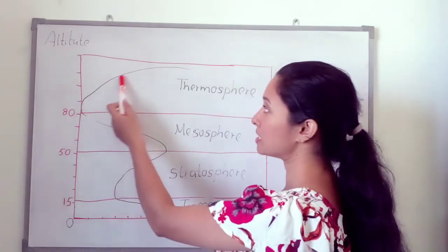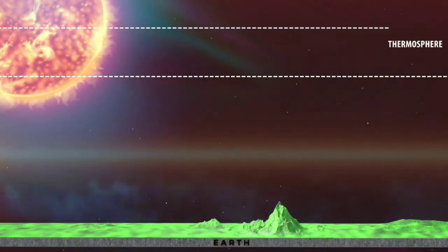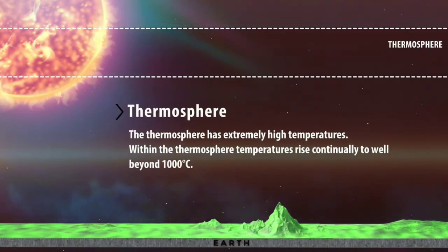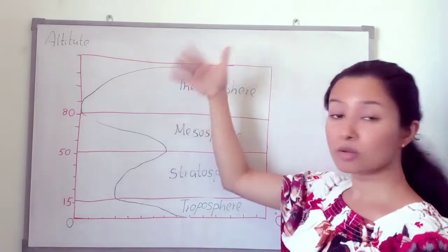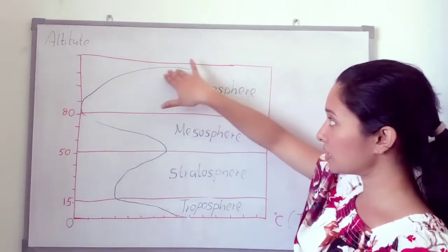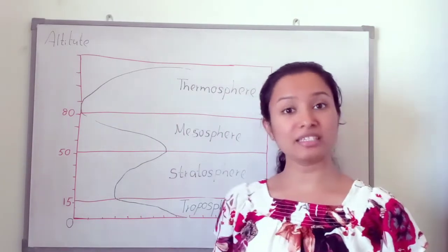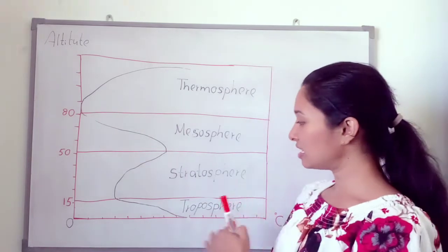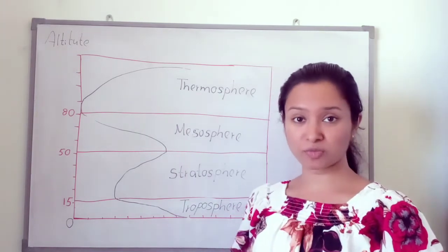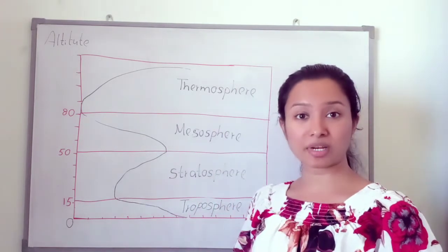In the thermosphere, temperature increases because there are air particles that absorb the sun's heat. As we get closer to the exosphere, the temperature increases further. Now you know how temperature differs in the different layers of the atmosphere and how temperature varies in each layer.